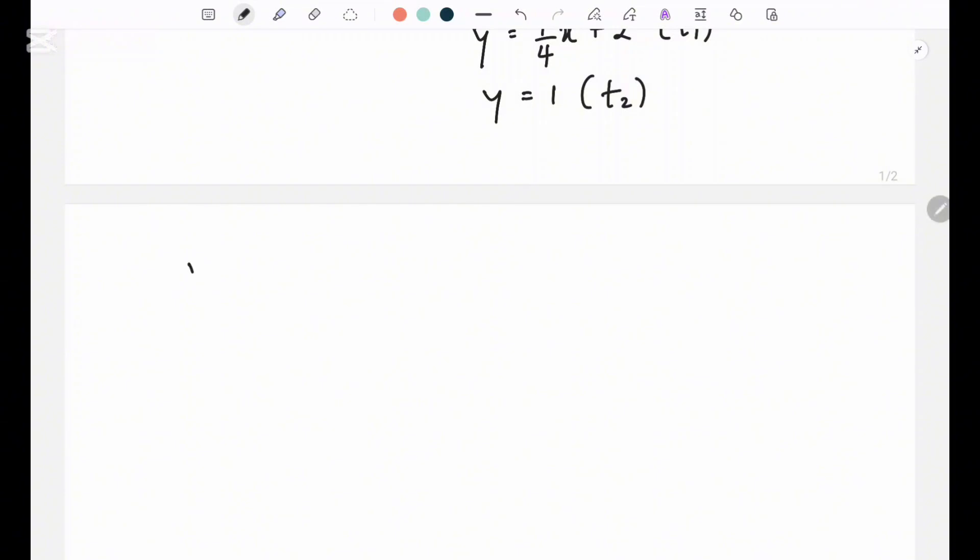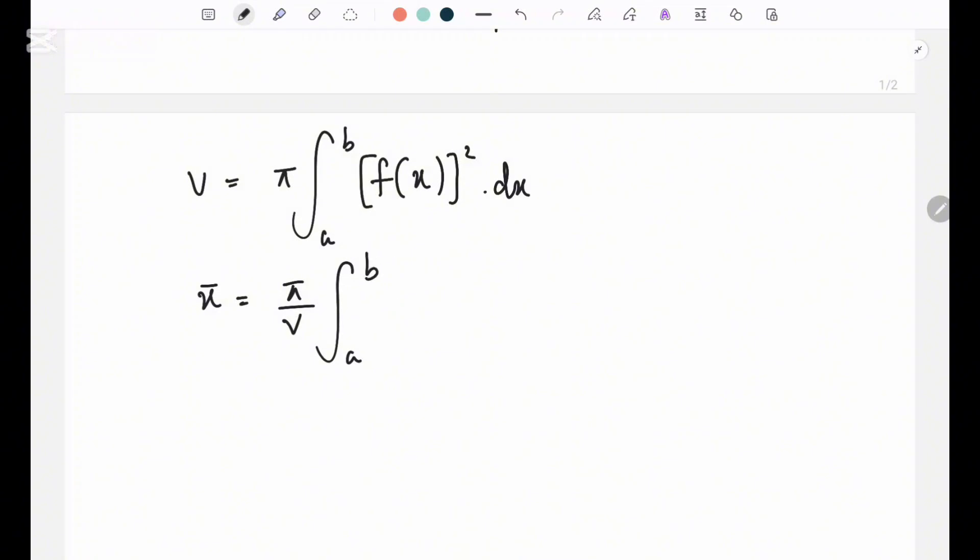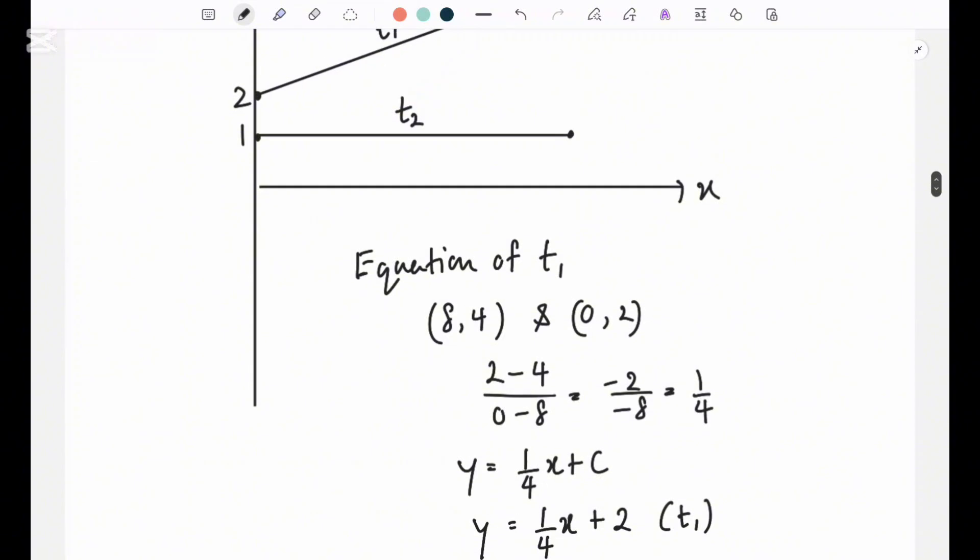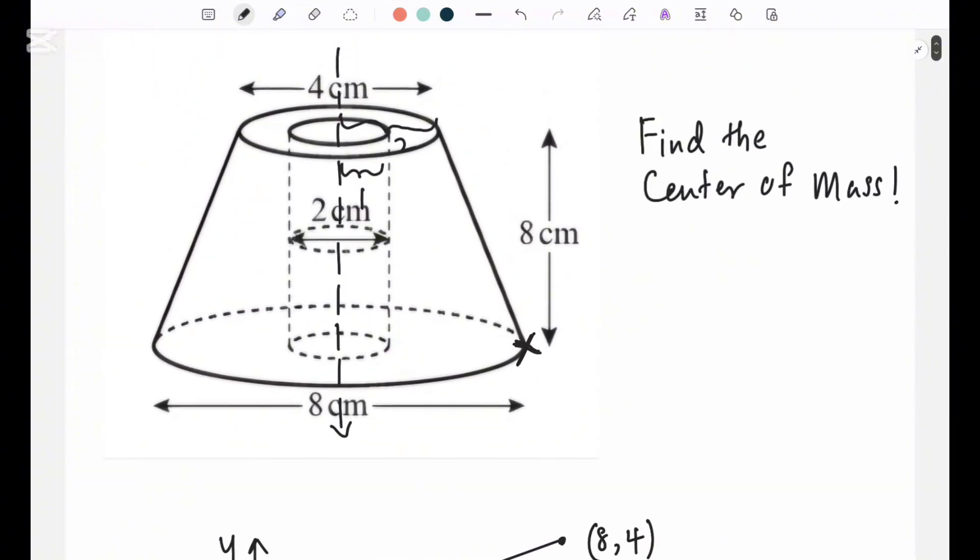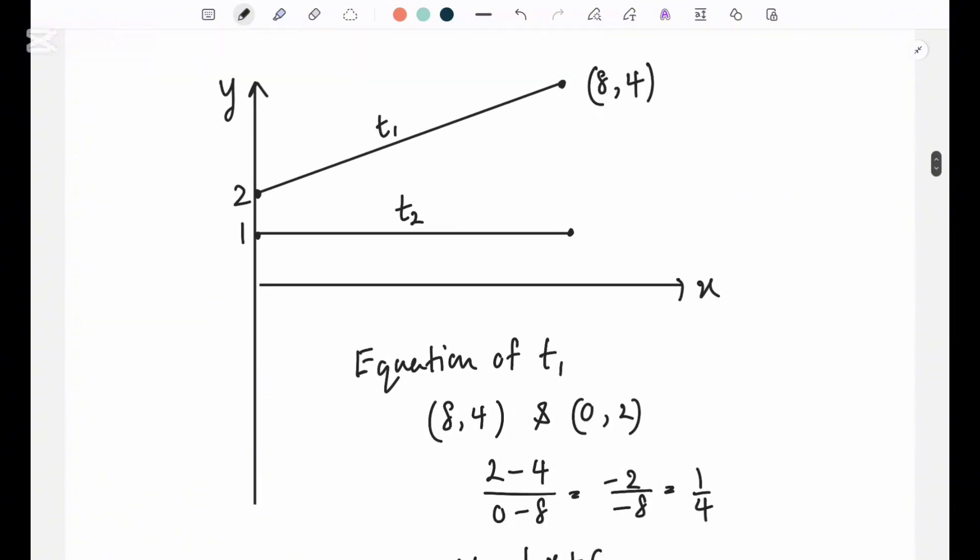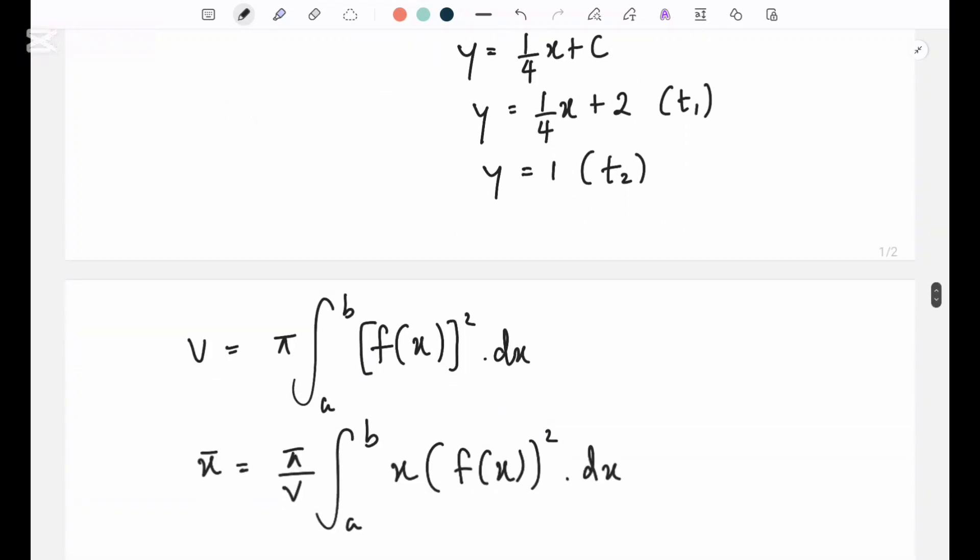So first we'll have to find the volume. So equation for volume under a line is pi into the integration of your intervals a to b, f(x) squared dx. And your center of mass is pi over v, intervals a to b, x into f(x) squared dx. So I also have to mention to you guys that this cylinder, the cylinder inside the cone, it's a cutout. So we'll have to subtract that volume when taking the final volume.